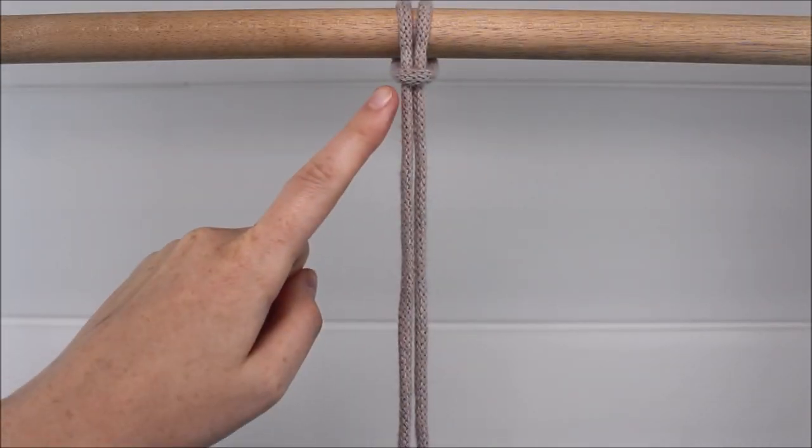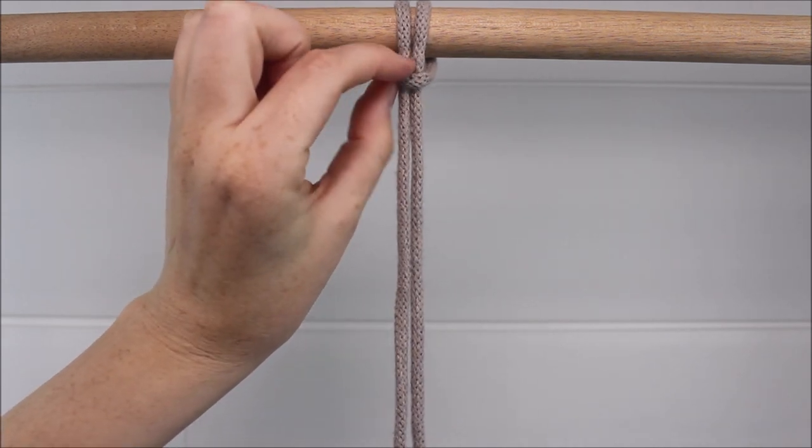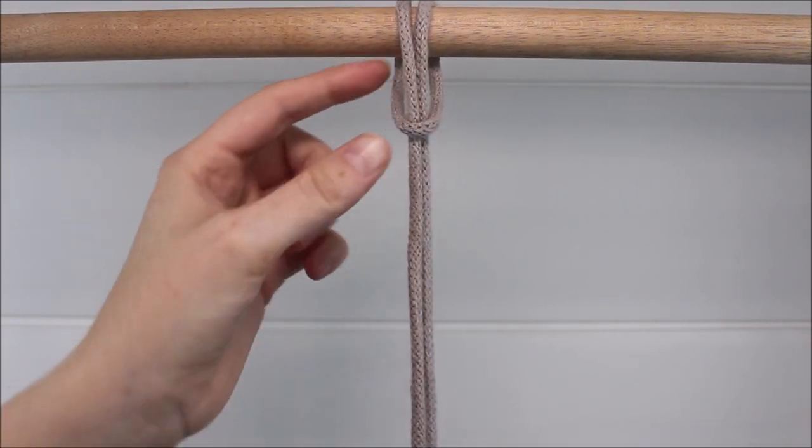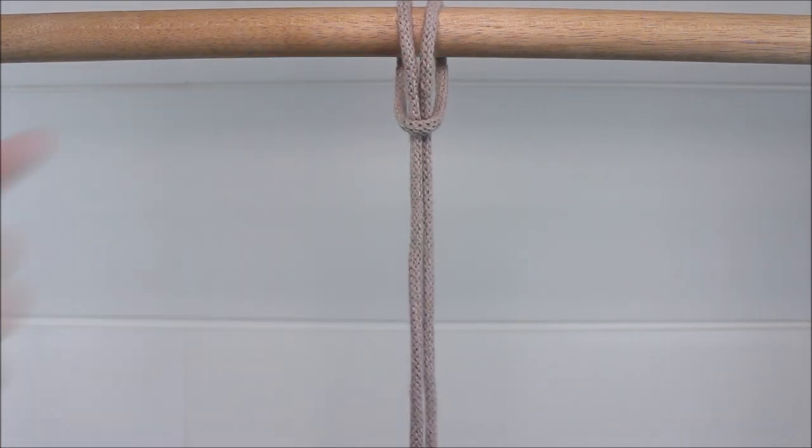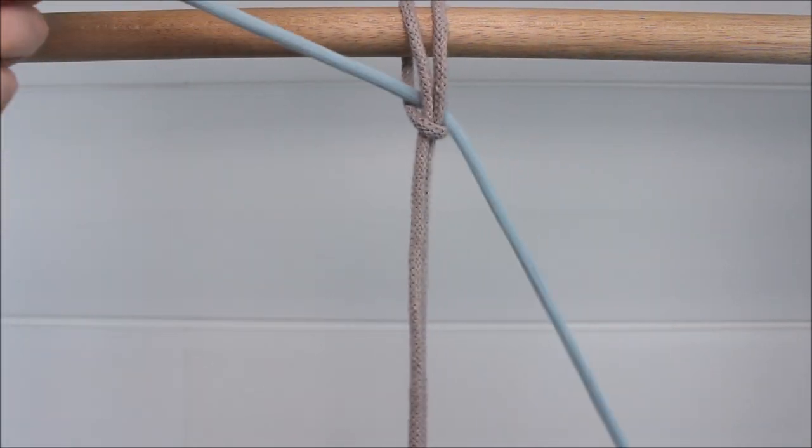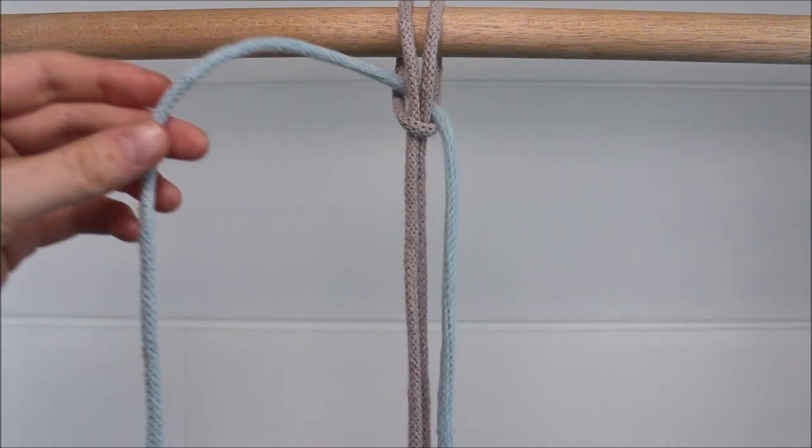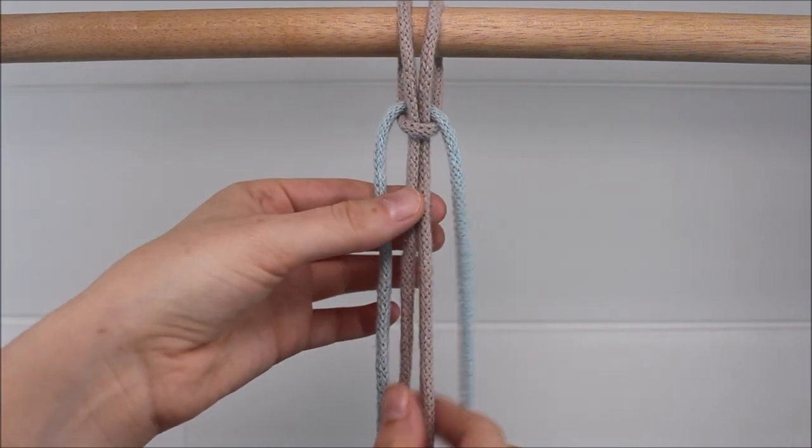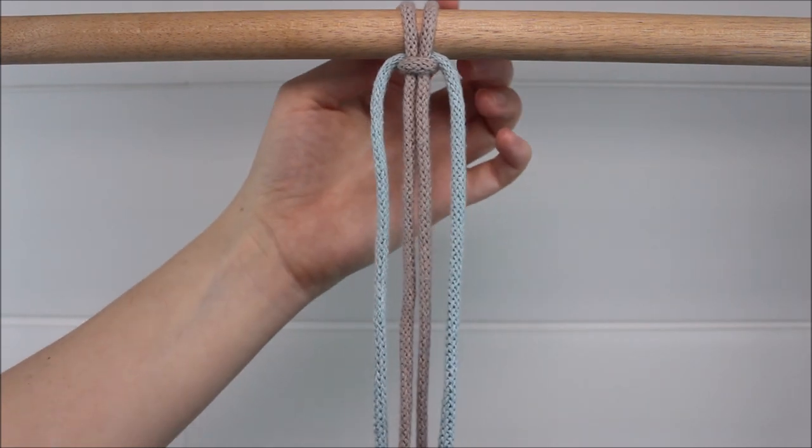Attach one rope to a dowel rod with a Lark's Head Knot. Then gently pull that Lark's Head Knot loose so you have this horizontal loop below the dowel rod. Now take a second piece of rope and just stick it right through that loop and pull it through until it's even on both sides. Then you can pull your Lark's Head Knot up top to tighten and secure it into place.